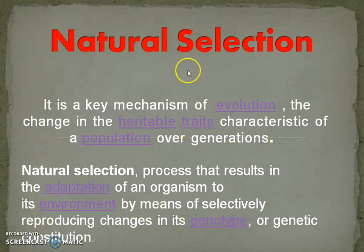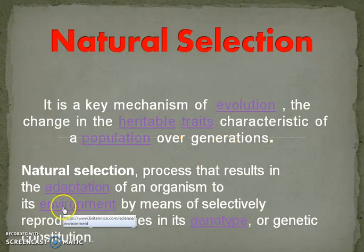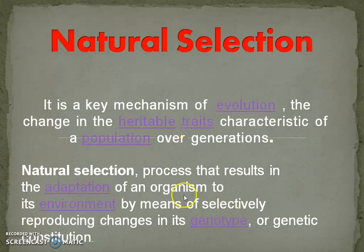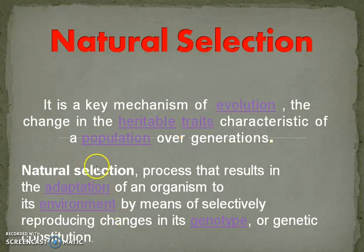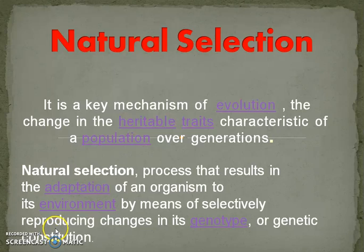Natural selection is a key mechanism of evolution — the change in the heritable traits or characteristics of a population over generations. Natural selection is a process that results in the adaptation of an organism to its environment by means of selectively reproducing changes in its genotype or genetic constitution. In one line, natural selection is an environmentally induced force, and the environment is responsible for driving adaptation. It operates against survival.